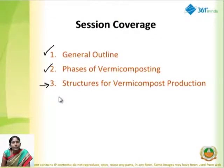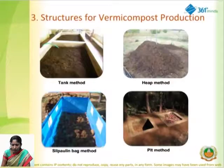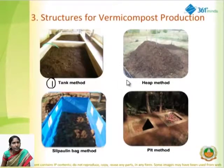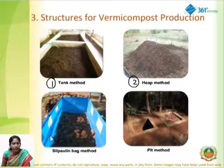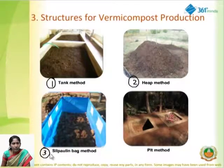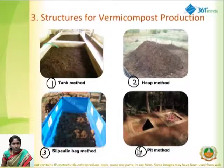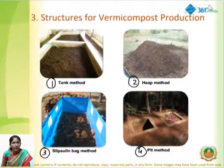Next, we move on to the third topic: structures of vermicompost production. You can see the picture — there are four different types. The first is a tank. The second is a heap. The third is a silk pollen bag. The fourth is a pit.